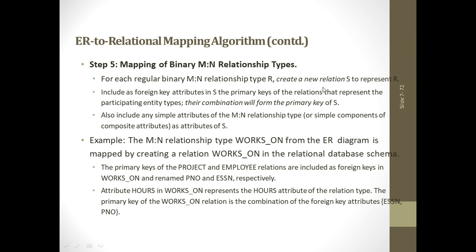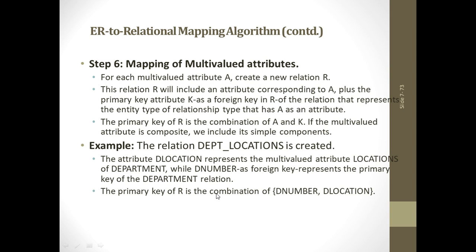For a many-to-many relationship, we create a new table and the primary keys of both tables are included as foreign keys in the new table, along with any other attributes. For example, many employees work on many projects for some number of hours, so the new table will have SSN, project number, and the attribute hours. For multi-valued attributes, a new table is created with one foreign key and the multi-valued attribute.